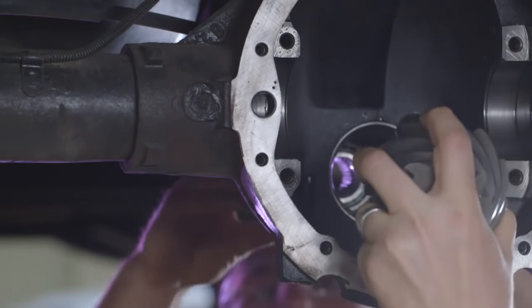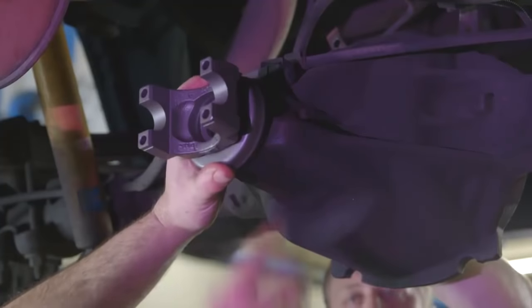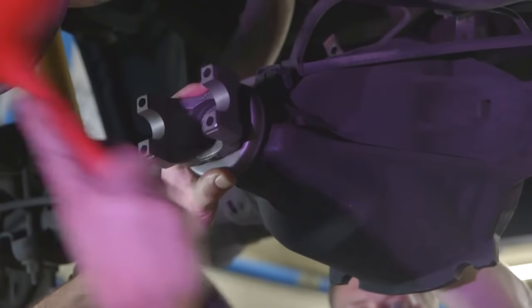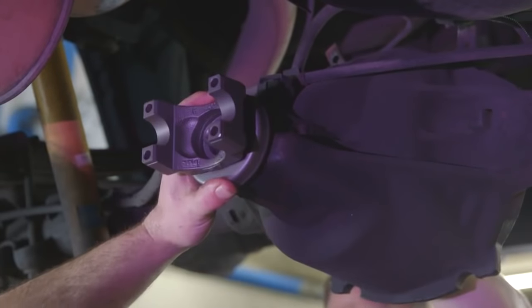Next, install the pinion gear and crush sleeve. This is a two man job. While someone holds the pinion gear in place, install the pinion yoke onto the pinion splines. Make sure you do not damage the pinion seal while installing the yoke.